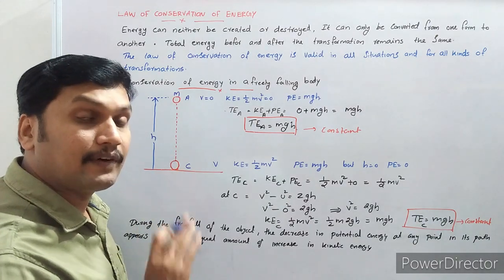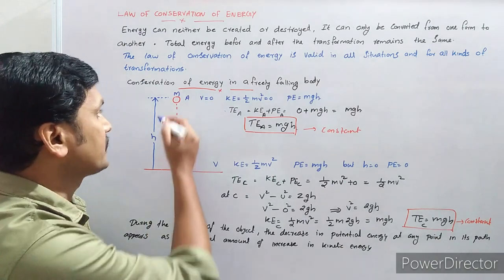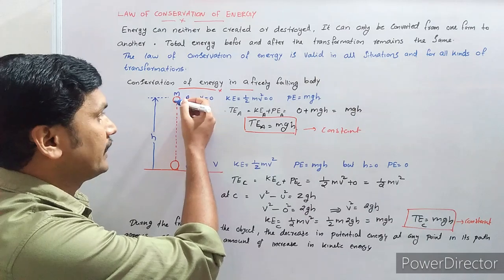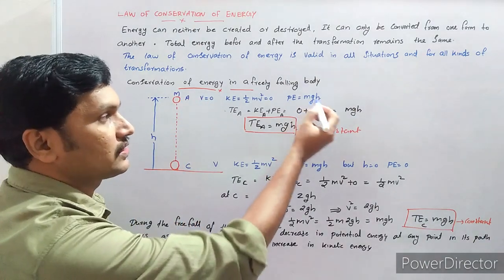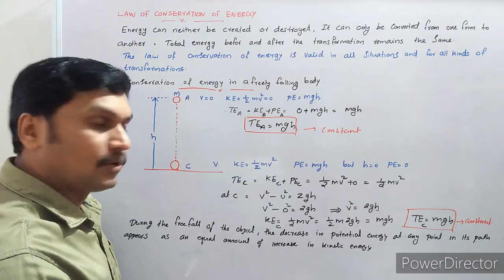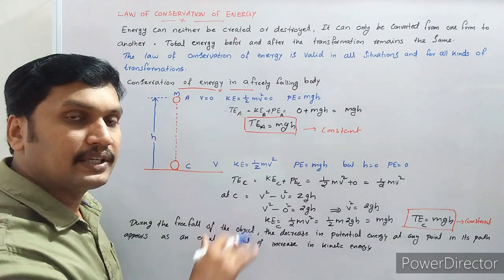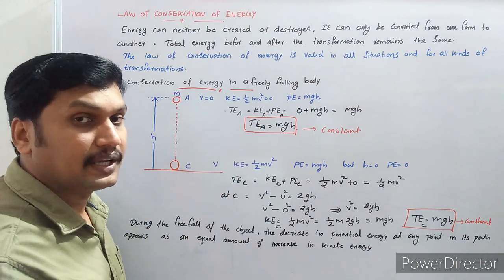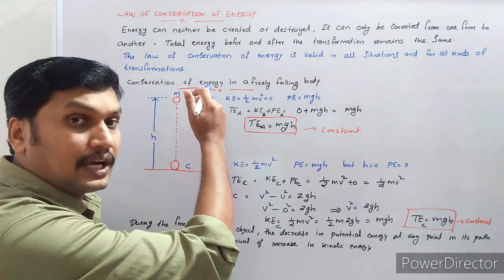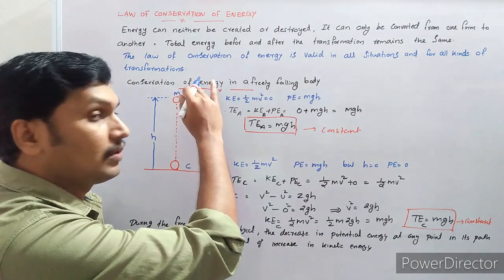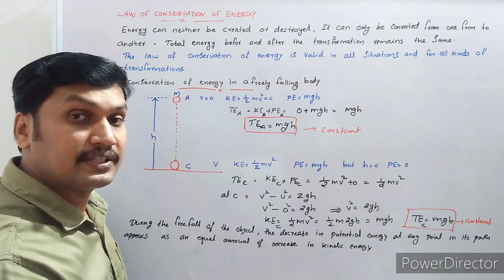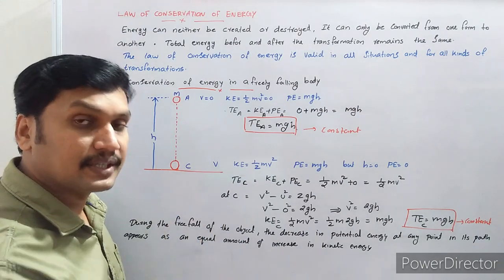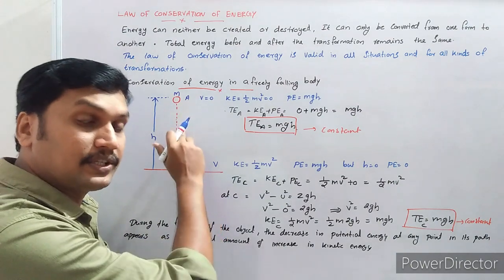Once the ball or body is falling down, gradually its kinetic energy increases. But once it is falling, the height decreases. Once the height decreases, its potential energy decreases. So when the body is in free fall, kinetic energy gradually increases and potential energy gradually decreases. We can say its potential energy is converting into kinetic energy. Initially it has potential energy only — no kinetic energy. But once the ball is falling, gradually its kinetic energy increases and potential energy decreases. The potential energy stored in the body is converted into kinetic energy.